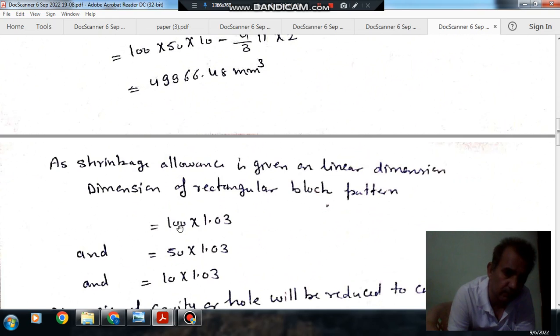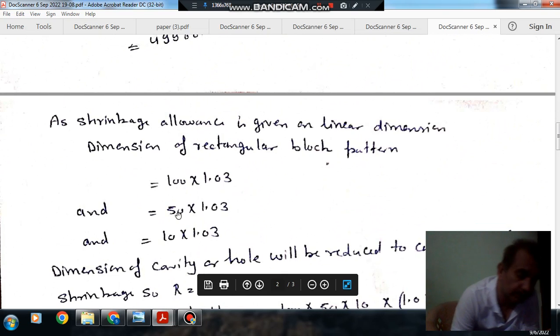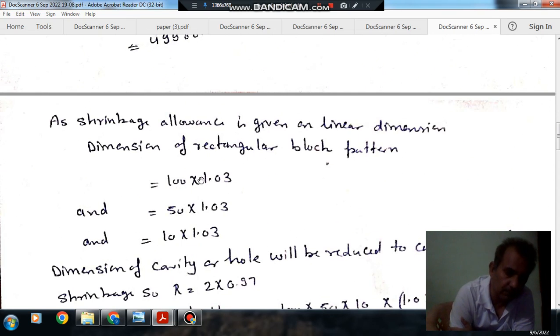So the pattern dimension will be 100 x 1.03 for shrinkage allowance is 3%. So 50 x 1.03 and 10 x 1.03. So these are the dimensions for casting and these are the dimensions of the pattern.